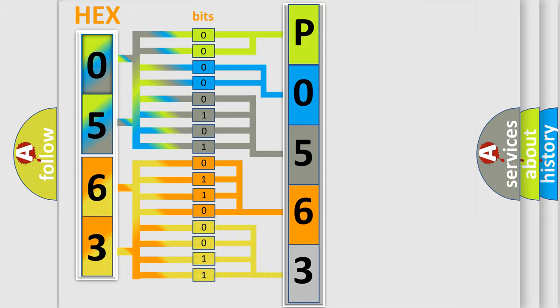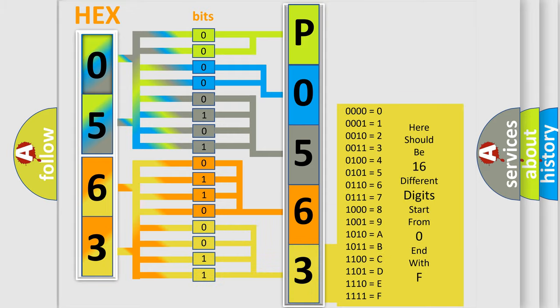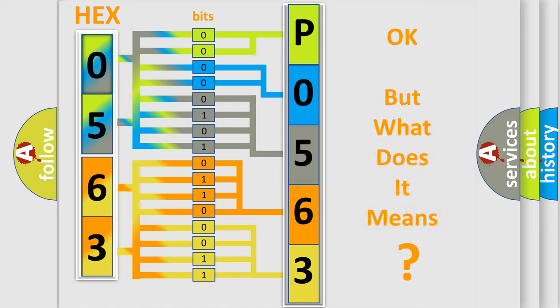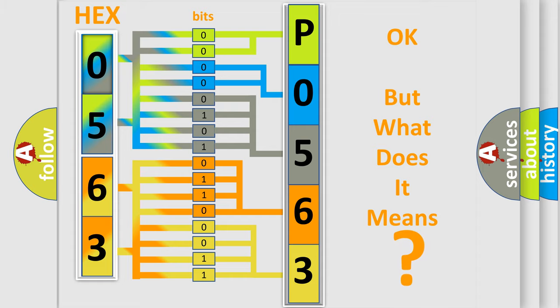A single byte conceals 256 possible combinations. We now know in what way the diagnostic tool translates the received information into a more comprehensible format. The number itself does not make sense to us if we cannot assign information about what it actually expresses. So, what does the diagnostic trouble code P056300 interpret specifically for car manufacturers?